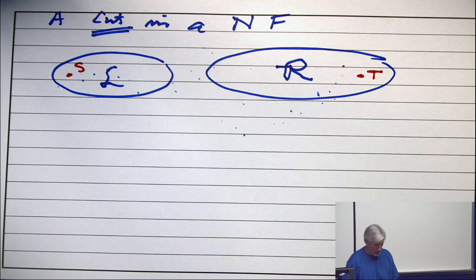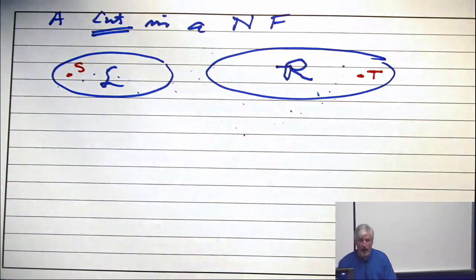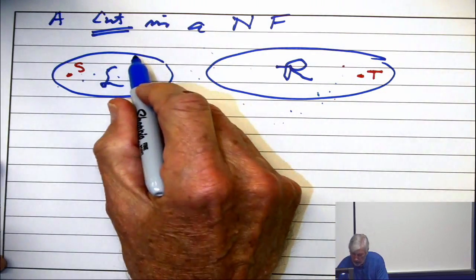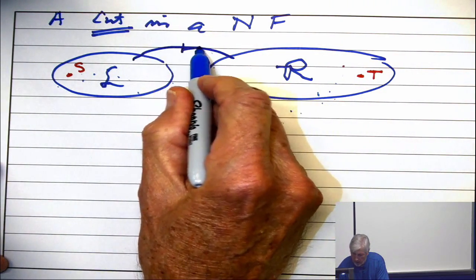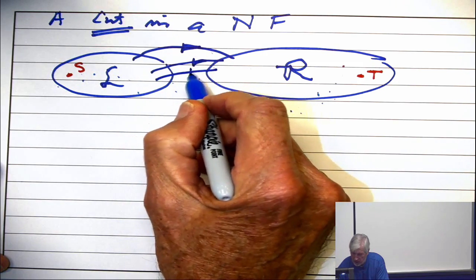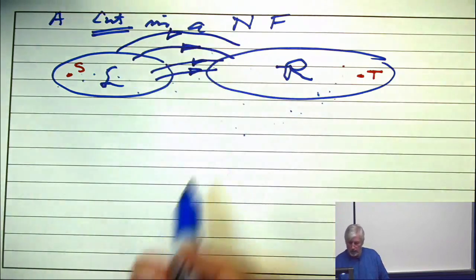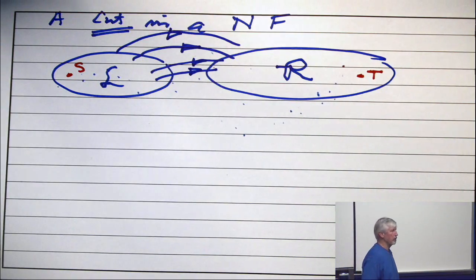In the network, there are edges back and forth between these and there's tons of edges inside. There are some edges from L to R which are like this, and it's natural to think of them as forward edges. They can share endpoints on either side.